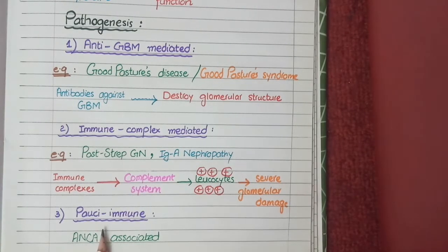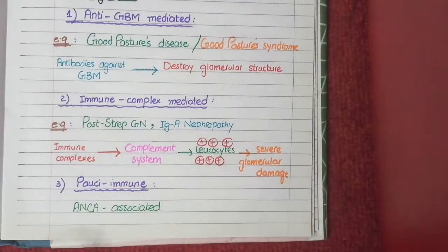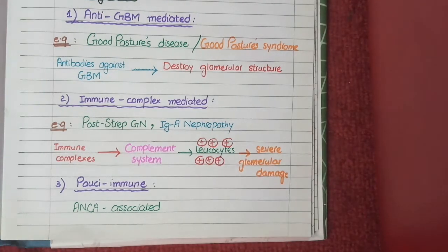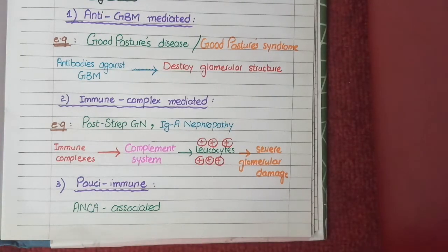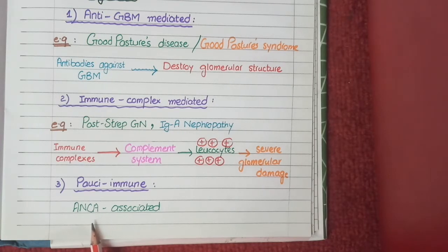The third category is pauci-immune glomerulonephritis. Pauci-immune means the absence of immune complexes or antibodies on immunohistochemical staining. In this category, there is no formation of anti-GBM antibodies or immune complexes; rather, there is formation of antibodies against neutrophilic cytoplasmic antigens called antineutrophilic cytoplasmic antibodies (ANCA). These antibodies are developed in some cases of vasculitis such as microscopic polyangiitis or Wegener's granulomatosis, but can also form without any systemic vasculitis. These antibodies target neutrophils and result in their activation, causing severe damage to glomeruli resulting in nephritic syndrome and rapid decline in renal function.